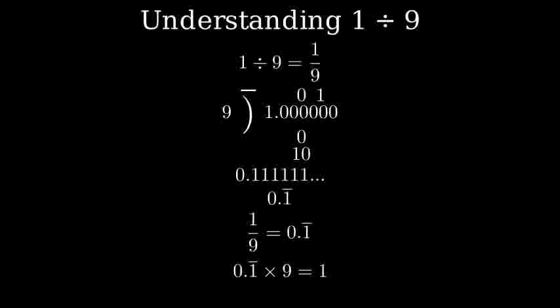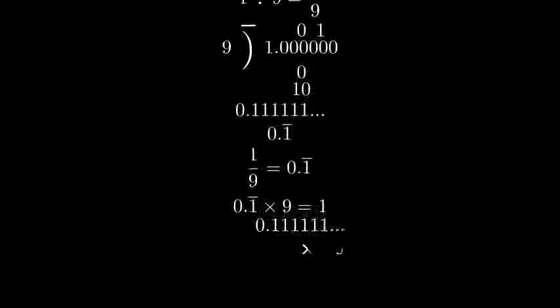We can verify this by multiplying 0.1111 repeating by 9. Let's see this multiplication. 9 times 0.1111 repeating equals 1. This confirms that our decimal representation is correct.